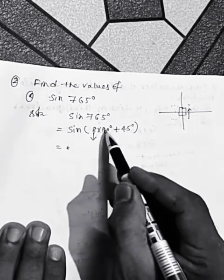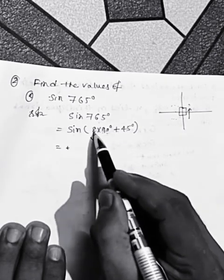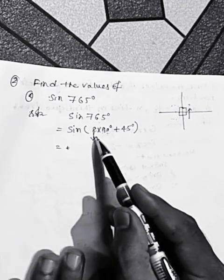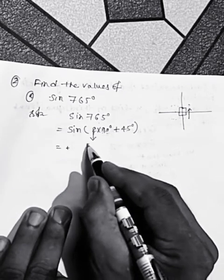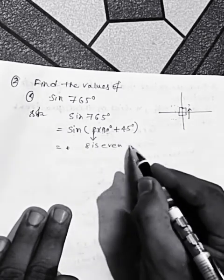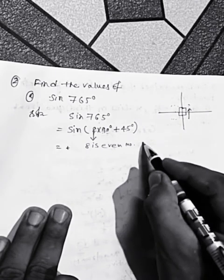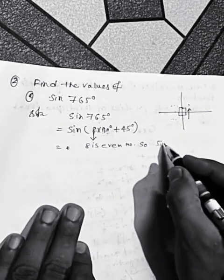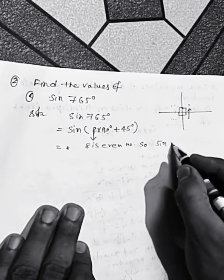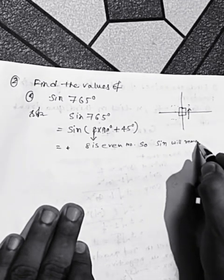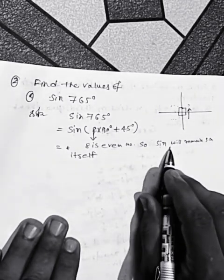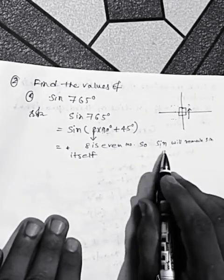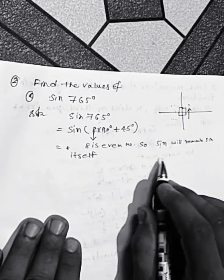The coefficient of 90 is 8. Since 8 is an even number, the trigonometric function will remain the same — sine remains sine, cos remains cos, tan remains tan, cot remains cot, sec remains sec, and cosec remains cosec.